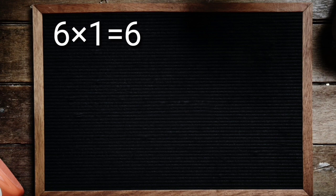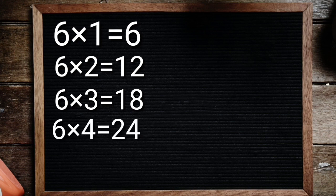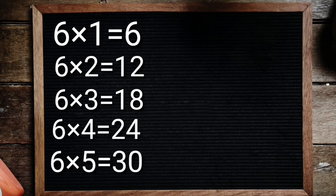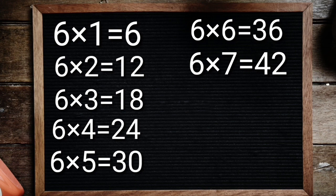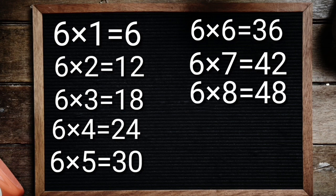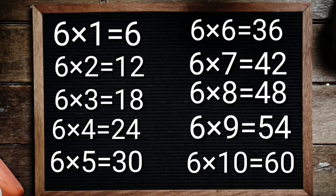6 1's are 6, 6 2's are 12, 6 3's are 18, 6 4's are 24, 6 5's are 30, 6 6's are 36, 6 7's are 42, 6 8's are 48, 6 9's are 54, 6 10's are 60.